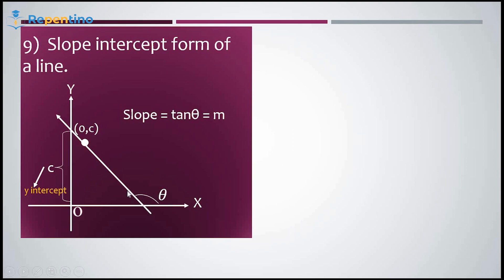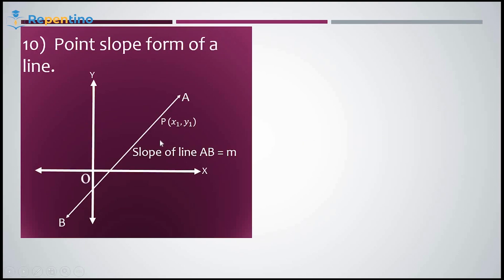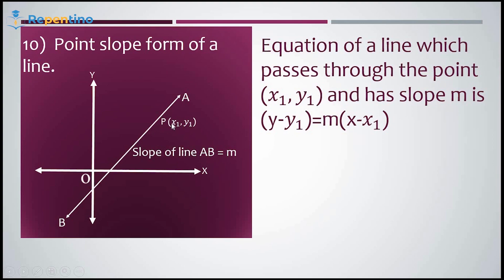Slope-intercept form of a line: a line making angle theta anti-clockwise has slope m equals tan(theta) and y-intercept c. The equation is y equals mx plus c. For point-slope form: a line passing through point (x1, y1) with slope m has equation y minus y1 equals m(x minus x1), where you know the point the line passes through and its slope.